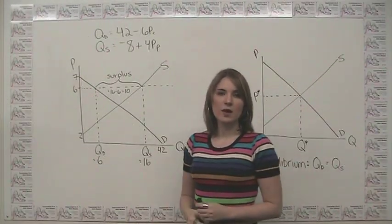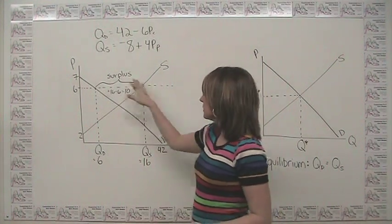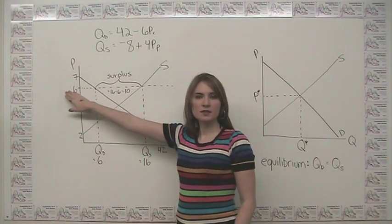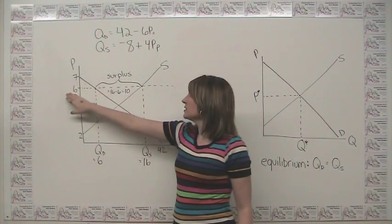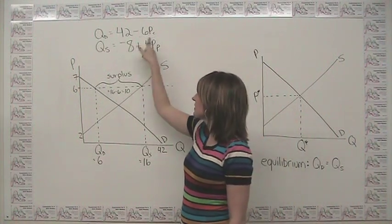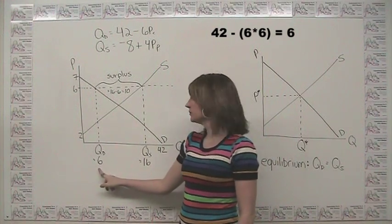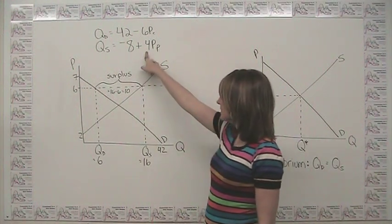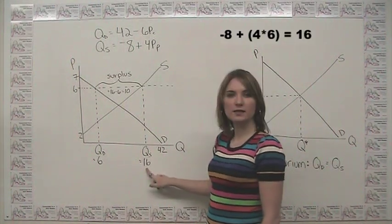Now let's think about what happens if our price is higher than the equilibrium price. As an example here, suppose that the price of our item is now 6. Well at a price of 6, we can again find out what supply and demand are. And we'll notice if we plug 6 into this equation here, we get a demand of 6. And if we plug 6 into our supply equation, we get a supply of 16.